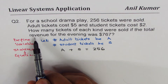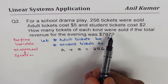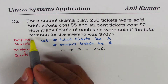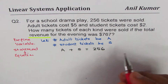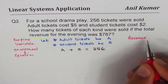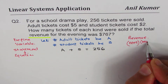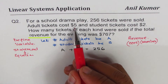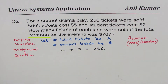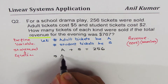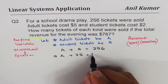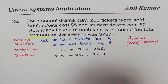We are given: how many tickets of each kind were sold if the total revenue for the evening was $767? Revenue is the product of cost times number. So in this case, the cost for adult is $5 and for student is $2. The revenue equation is 5A plus 2S equals 767. So we get 2 equations, and we'll number them as 1 and 2.